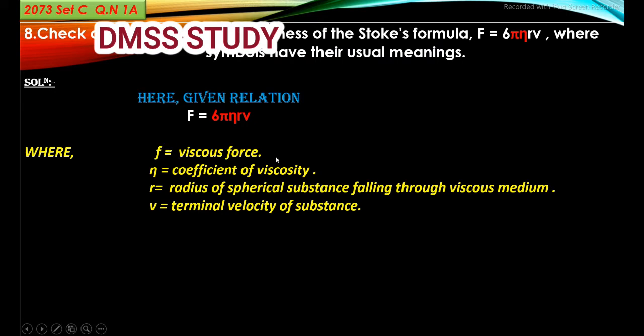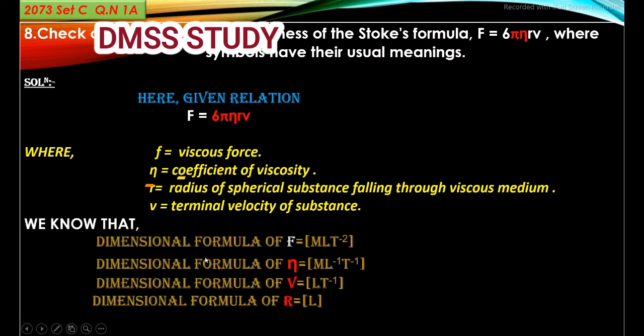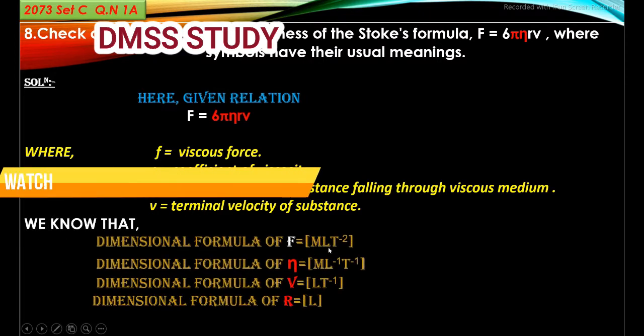To check dimensional correctness, we need the dimension formula of each component and substitute them in the given relation. We know that dimensional formula of F (viscous force) is [MLT⁻²].